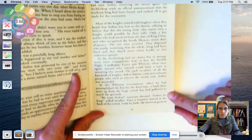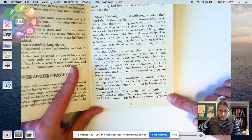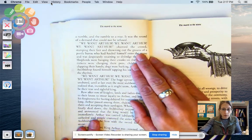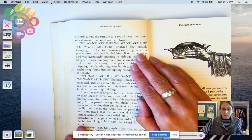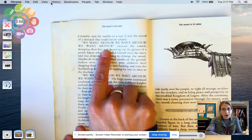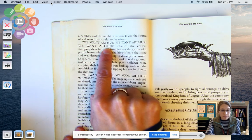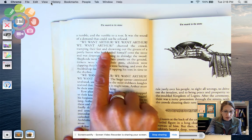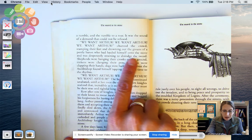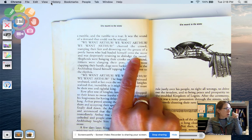We want Arthur, someone shouted. Arthur for king, yelled another. Then a murmur started at the back of the crowd. Little by little, the murmur grew to a rumble and the rumble to a roar. It was the sound of a demand that could not be refused. Like, we want Arthur, we want Arthur, we want Arthur. Wow. I guess after he pulled the sword out of the stone for the fourth time, they were like, well, he must be the true born king. Chanted the crowd, stamping their feet and drowning out the groans of a portly baron who had hauled himself onto the stone and was desperately straining to dislodge the sword. So this is funny, if you can imagine, as the whole crowd is chanting, we want Arthur, we want Arthur. Then there's this portly baron, portly means like kind of chubby, this chubby baron is like a nobleman. He's like, straining to pull the sword out.